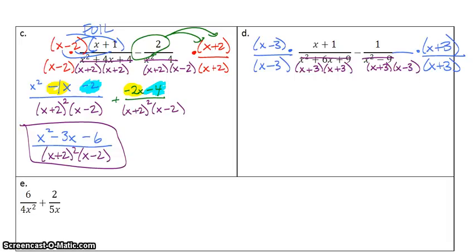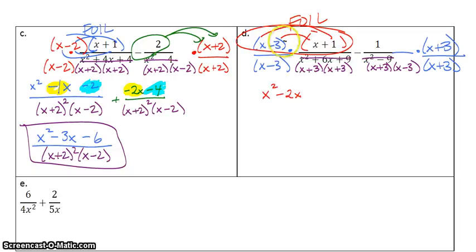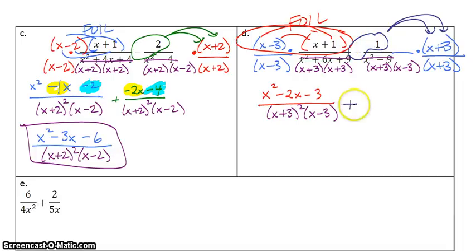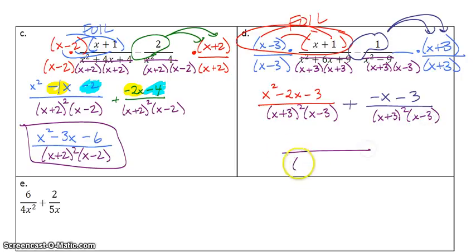The left side — I need to FOIL that. I'm thinking x squared and then negative 3x plus 1x. Negative 3x plus 1x is negative 2x. Negative 3 times 1 for the lasts is negative 3. For the denominator, I've got x plus 3 squared times x minus 3. For the right side, two options: you can distribute the subtract sign now or distribute the subtract sign later. I'm going to distribute the subtract sign now. Negative 1 times x is negative x. Negative 1 times 3 is negative 3. My bottom is x plus 3 squared times x minus 3.